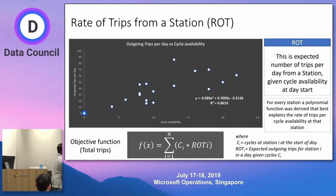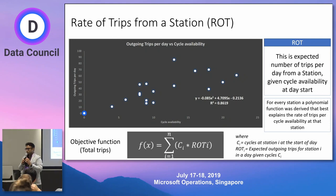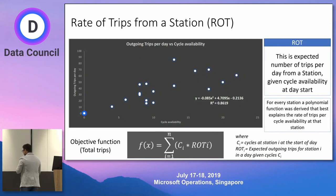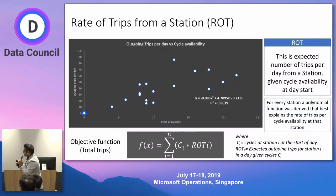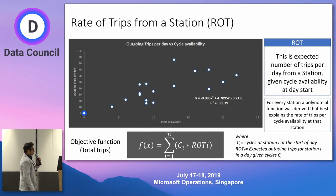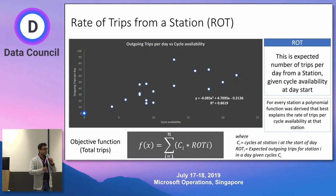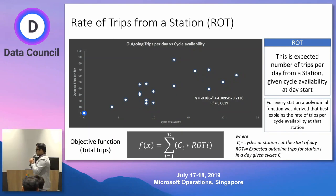Rate of trips is: given X number of cycles at a station, what is the expected number of outgoing trips? If I have 5 cycles, how many trips can I expect? If I have 10, how many? We use past data to plot this and come up with a polynomial curve — a quadratic equation. Using past data, I know that if I increase the number of cycles at a station, how many trips I can expect. This is the most fundamental and useful equation for optimization.